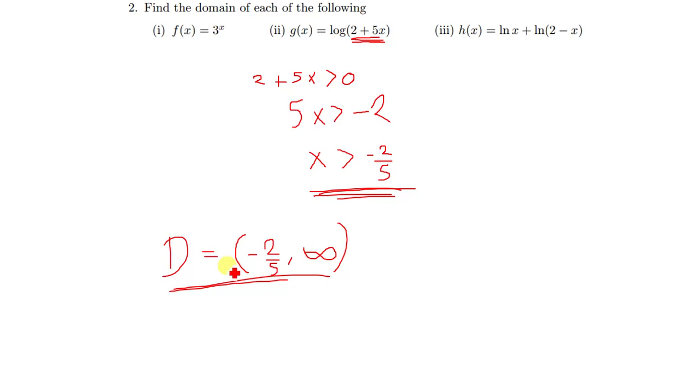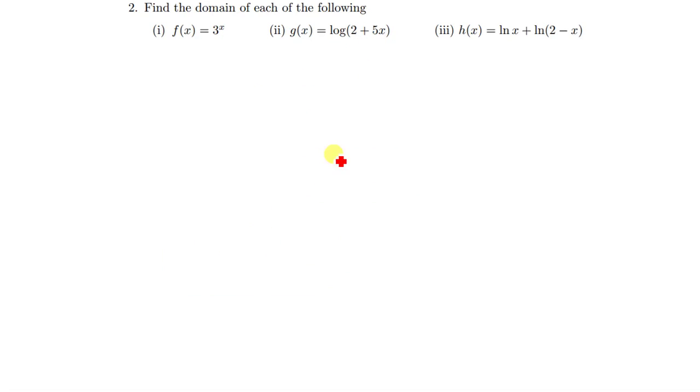And since it's supposed to be greater than zero, we have decided not to add negative 2 over 5 to the set. Hence we used this kind of bracket, so meaning negative 2 over 5 is not part of the set. We are only talking about numbers greater than negative 2 over 5.